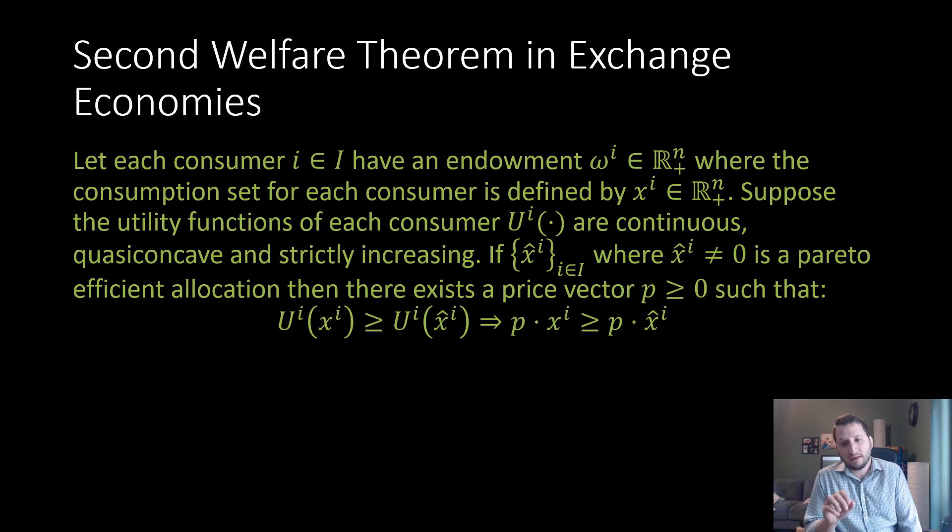If x̂^i for each consumer i, where x̂^i is not equal to zero, is pareto efficient, then there exists a price vector p ≥ 0 such that if we have some other bundle x^i being greater than or equal to U^i(x̂^i), which is going to be our pareto efficient allocations which are non-zero, that's going to imply that this alternative bundle is going to be more expensive.